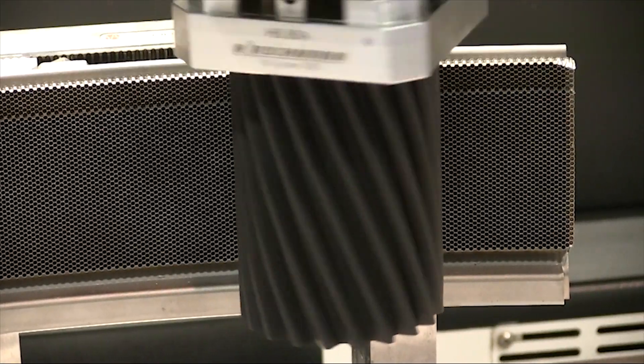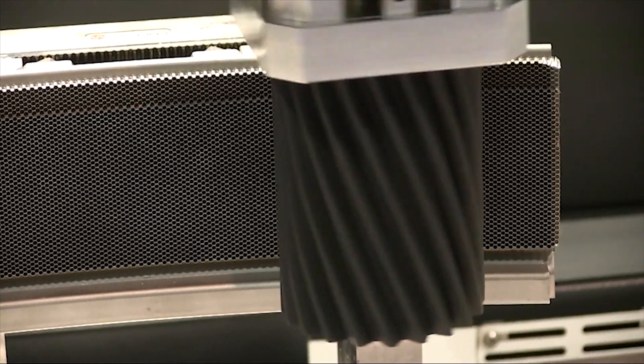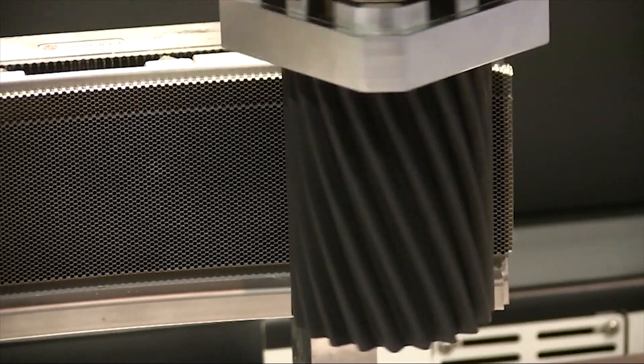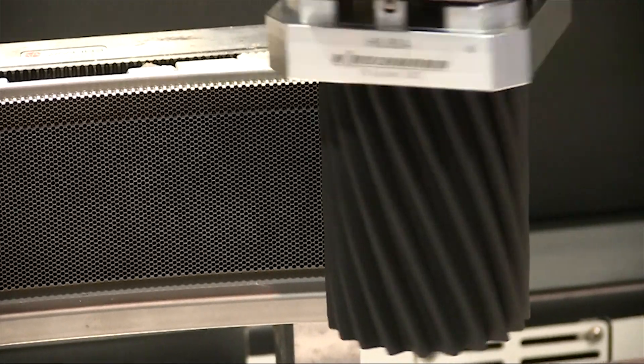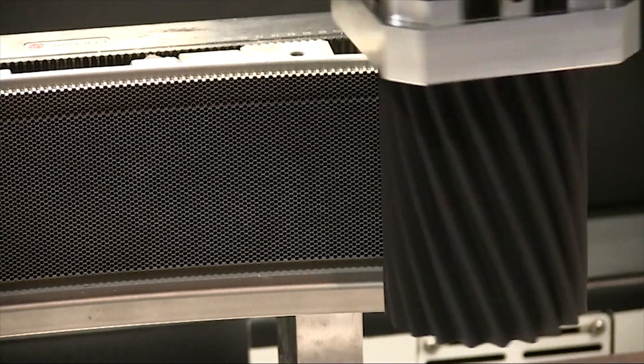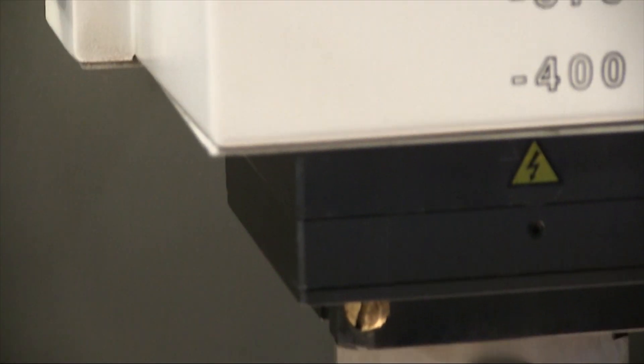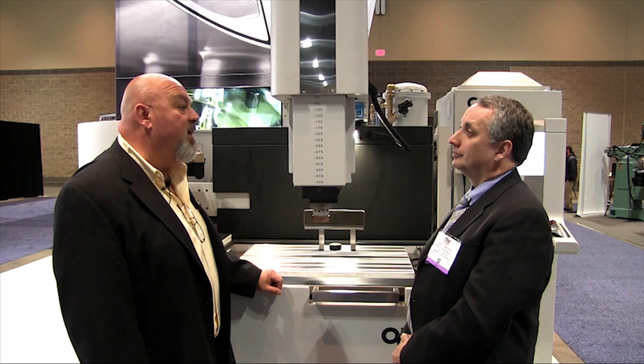Basically, you're putting in the surface finish you want, the material that you've got, and loading in the toolpath and it's done. You do not have to be an experienced EDM guy that's listening for the sound of bacon frying. The machine will look after that itself.